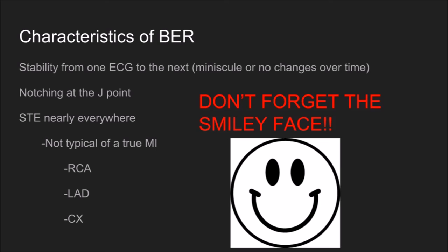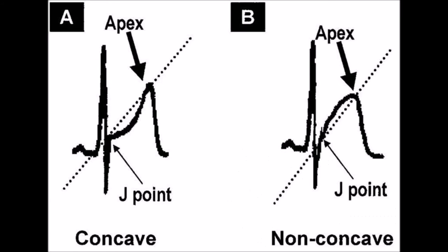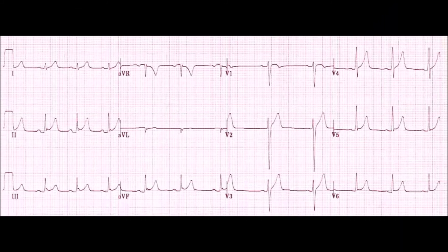Looking at a typical BER ECG, don't forget the smiley face sign. You can see standard morphology with both concave and non-concave waveforms. In BER, the waveform takes on sort of half of a smiley face's mouth, where the J point slurs back up into the T wave. Versus with a traditional STEMI — a transmural MI — it makes more of the frowny face shape.